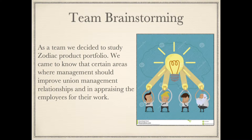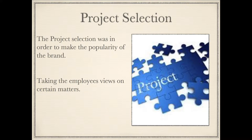Phase 1 - Team Brainstorming: As a team, we decided to study Zodiac's product portfolio. We came to know that certain areas where management should improve are union-management relationships and in appraising the employees for their work. The project selection was made in order to increase the popularity of the brand by taking the employees' views on certain matters.